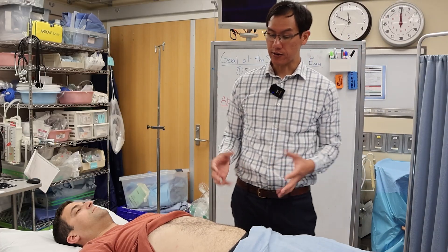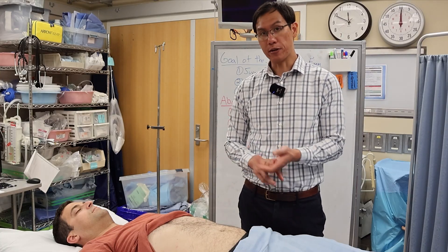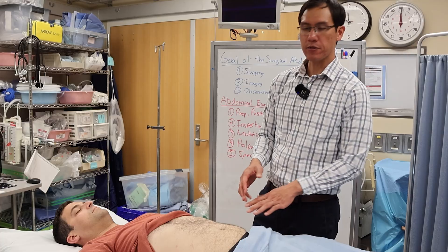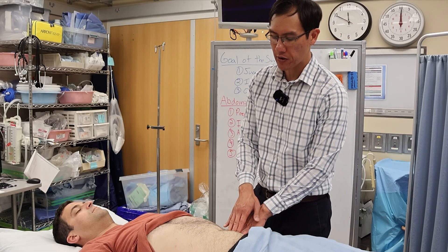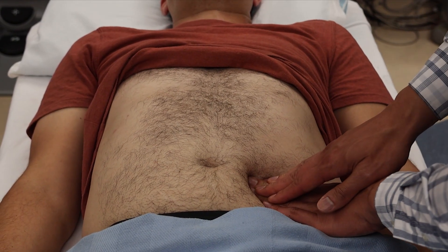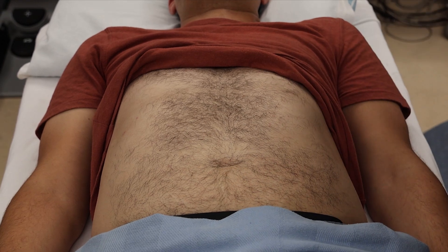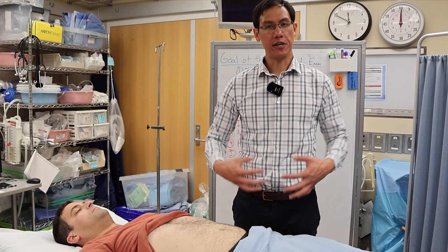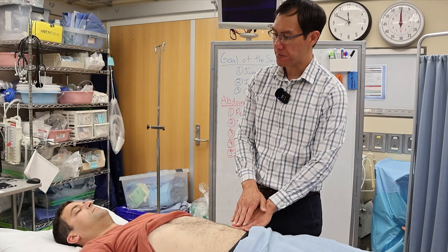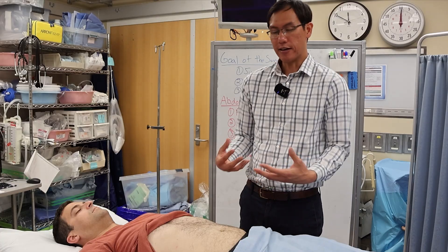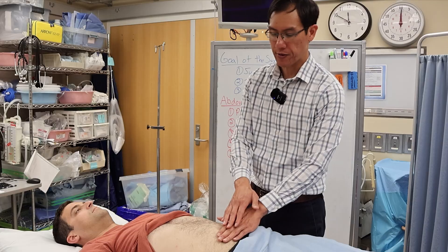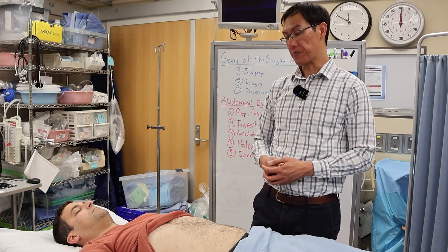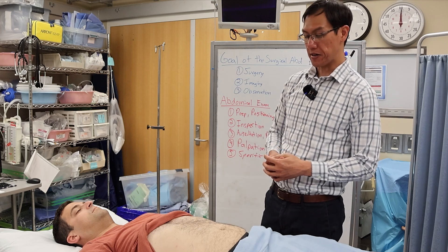Key palpation findings include guarding and rebound tenderness. Rebound tenderness is a sign of early peritonitis — the patient has pain when you release pressure rather than when you apply it. Guarding is when the abdomen is rigid; the patient is fighting against your palpation and cannot relax the abdominal muscles due to pain. This board-like rigidity is a sign of severe peritonitis.